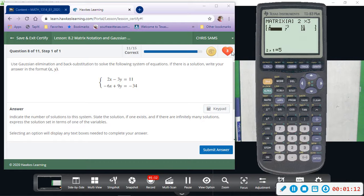And then second row is going to be negative 6, and then positive 9, and then negative 34. Okay, so once you have it all entered, second quit to get out.